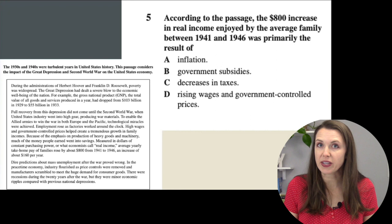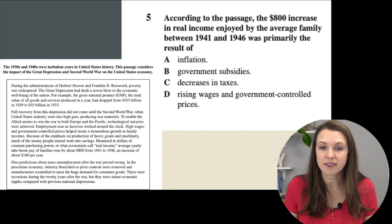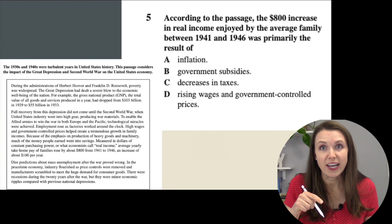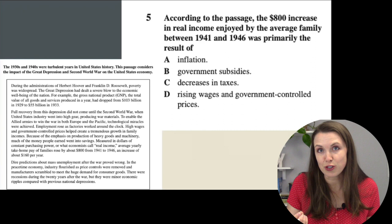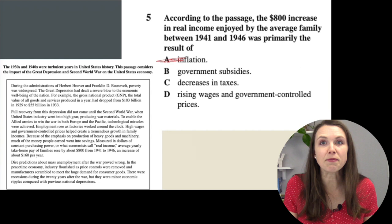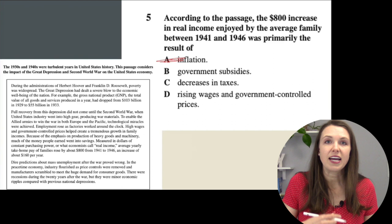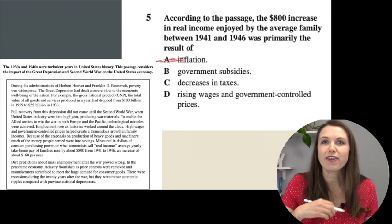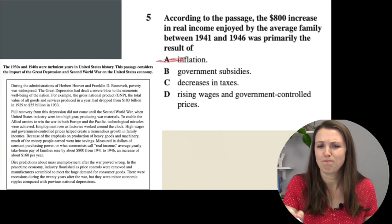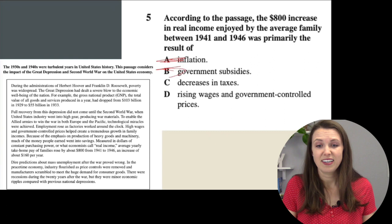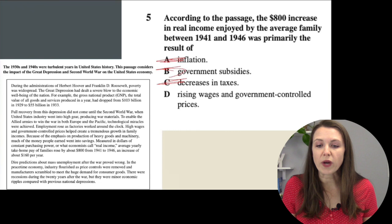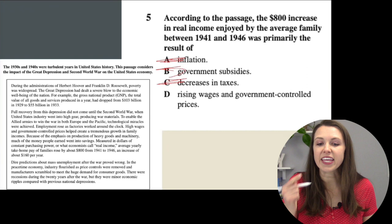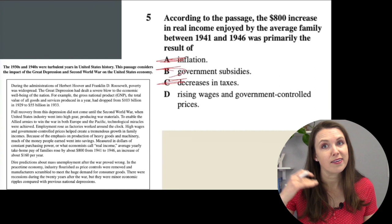Number five: the $800 increase in real income between 1941 and 1946 was primarily the result of what? Inflation? Not really. Government subsidies? No, the government didn't subsidize that $800. Decreasing taxes? No. Raising wages? Yes — the passage indicated they were raising wages, and the government controlled prices in that managed market. The answer is D.